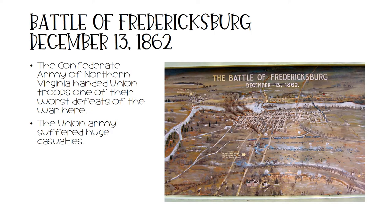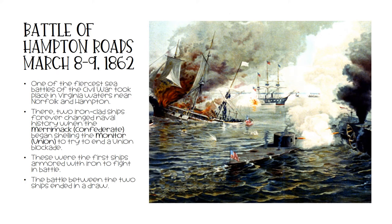The Confederate Army of Northern Virginia handed Union troops one of their worst defeats of the war at the Battle of Fredericksburg on December 13th, 1862. The Union Army suffered huge casualties during this battle. The last Virginia battle we will look at is the Battle of Hampton Roads on March 8th through the 9th, 1862. It took place in Virginia waters near Norfolk and Hampton. It was one of the fiercest sea battles of the Civil War. Two ironclad ships forever changed naval history when the Merrimack, a Confederate ship, began shelling the Monitor, a Union ship, to try to end a Union blockade. These were the first ships armored with iron to fight in battle. The battle between the two ships ended in a draw.